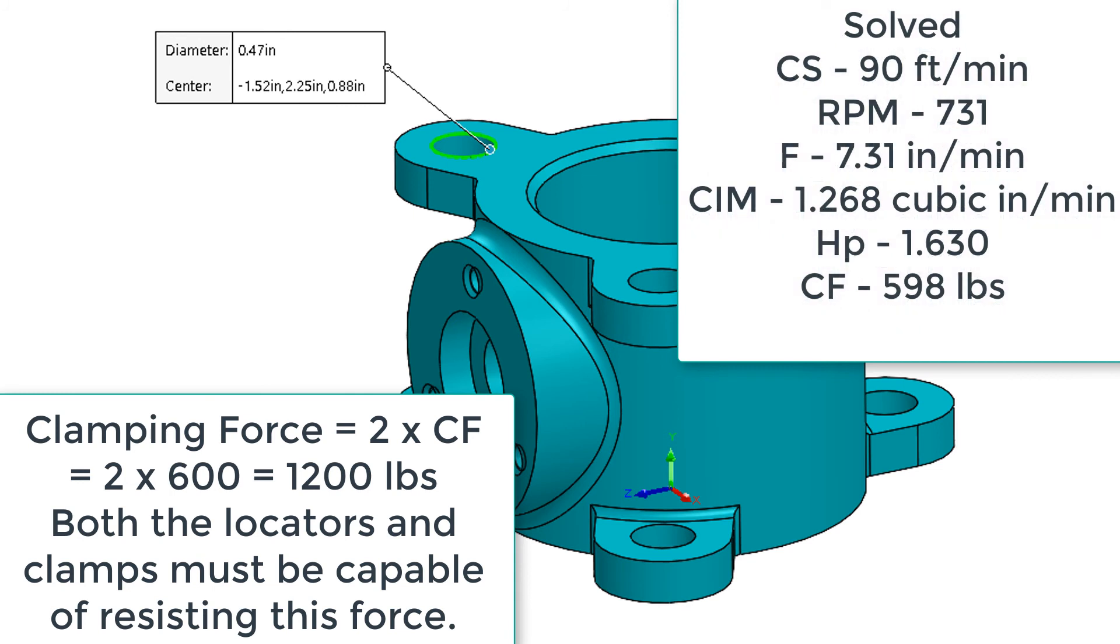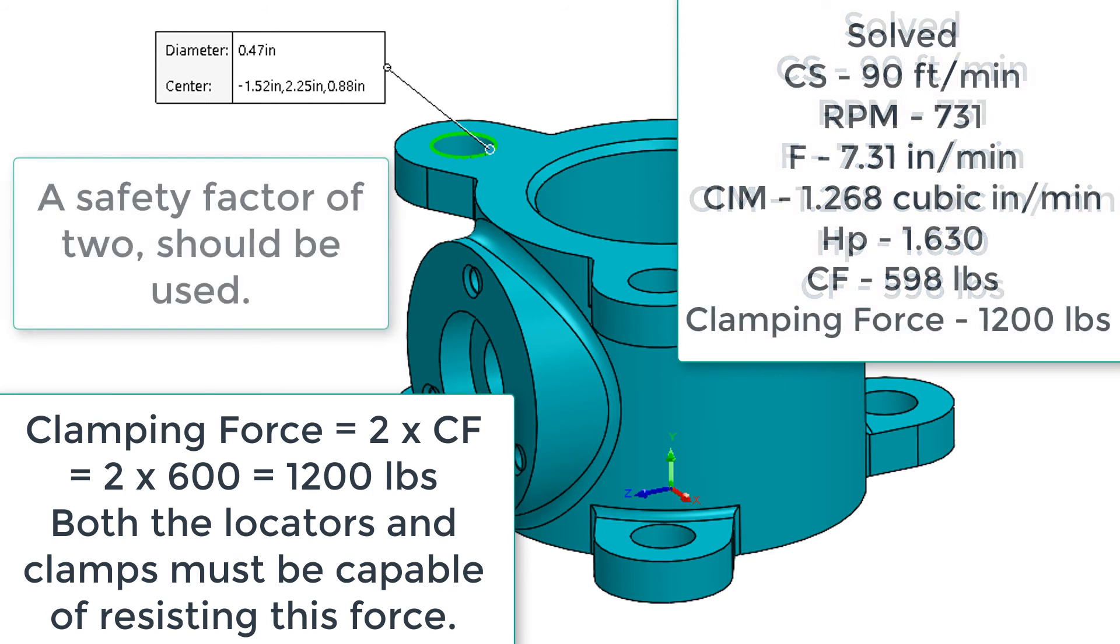So the next thing we need to do is build in a safety factor of two. Meaning both our locators and clamps must be capable of resisting two times the cutting force or 1200 pounds of force.